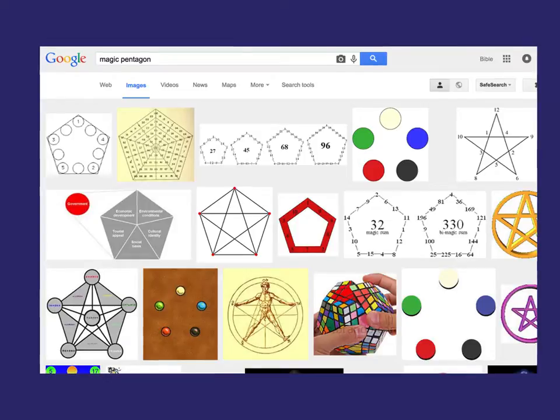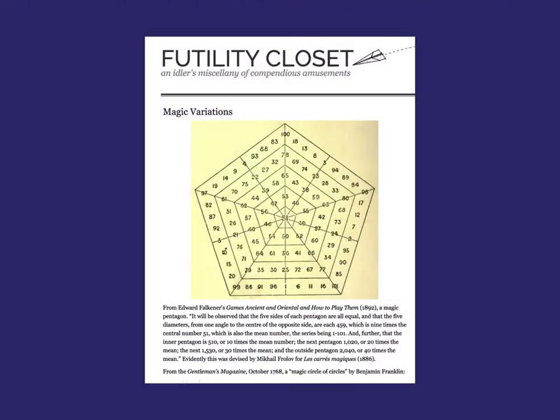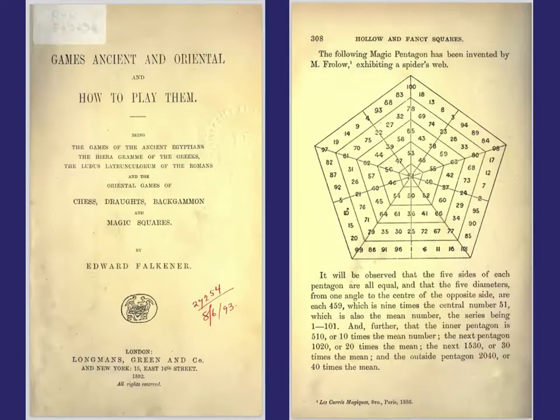I went to this really cool website called Futility Closet. They've got a whole bunch of weird mathematical things. They talk about this magic pentagon in a book by Edward called Games Ancient and Oriental and How to Play Them. So I went and got the book, and there's just a single page on this magic pentagon.